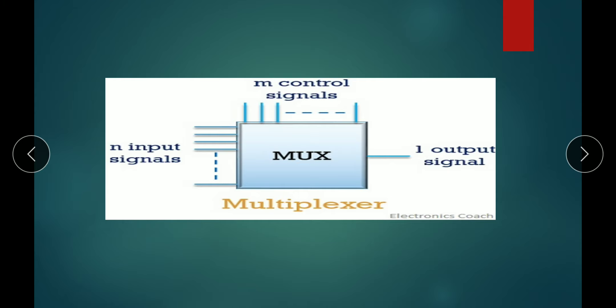This is n inputs, n control signals, and one single output — this is nothing but the multiplexer. The multiplexer accepts a number of inputs but the output is only one. Using the select lines, the select line decides which input is connected to the output side.